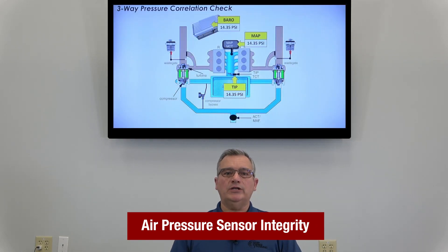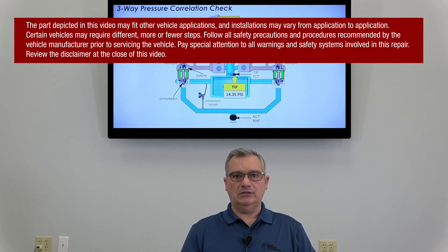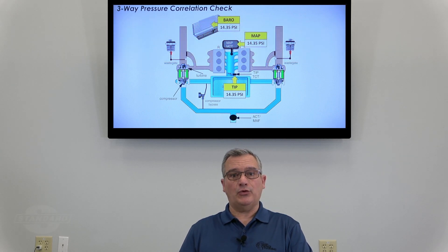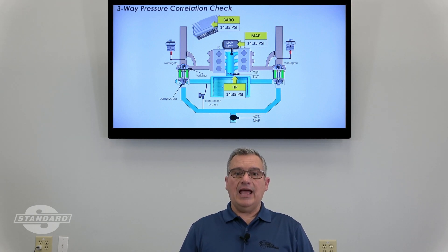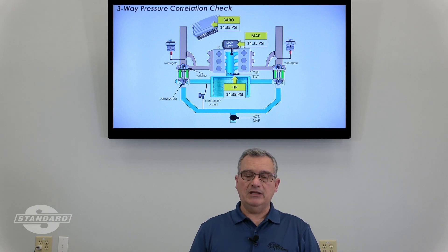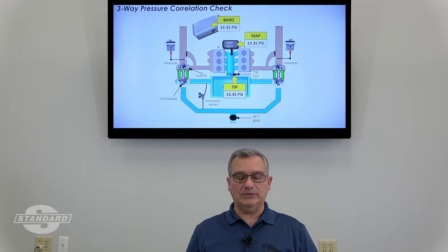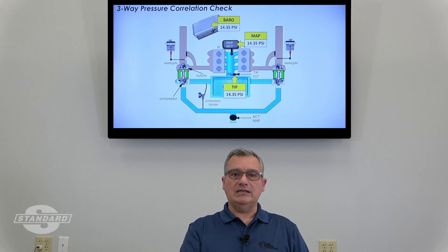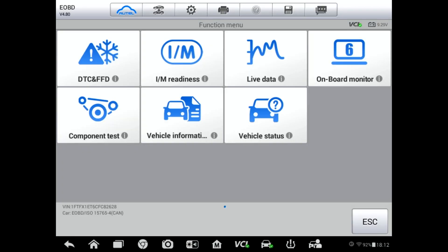On today's tech tip, we're going to show you how to check the barometric pressure sensor, the MAP sensor, and if it has it, a throttle input pressure sensor on a 2011 Ford F-150. This applies to any vehicle you might work on. The PCM will compare these sensors to ensure that they agree, which is important before diagnosing any air-fuel ratio problems on any vehicle.